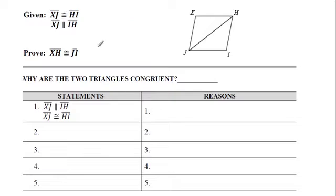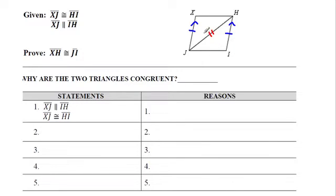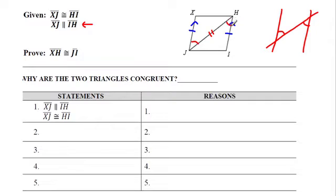So let's try this in a proof. Right off the bat, I like to mark the picture when I start. XJ is congruent to HI, and XJ is parallel to IH — that's going to help us out. It was all given to us, and I also know that JH is in both triangles. It's a bit unusual — I'm not trying to prove two triangles congruent directly; I'm trying to prove XH is congruent to JI. So I'll prove this triangle is congruent to this triangle first and then do it. They gave me parallel lines because of alternate interior angles — those angles are congruent because the lines are parallel.